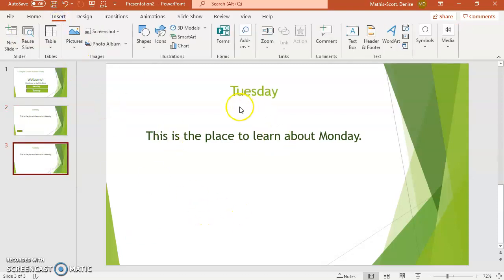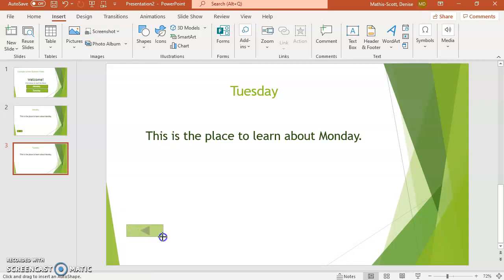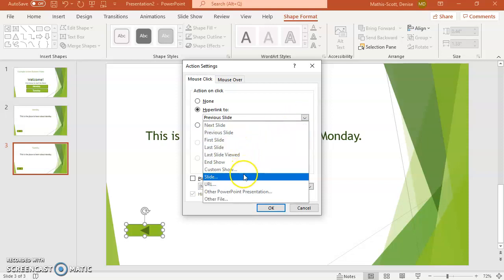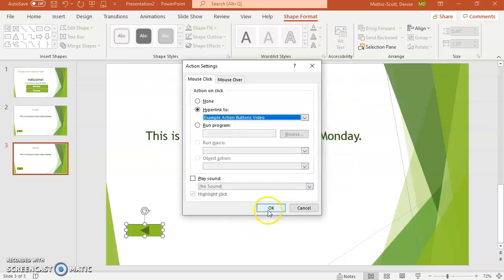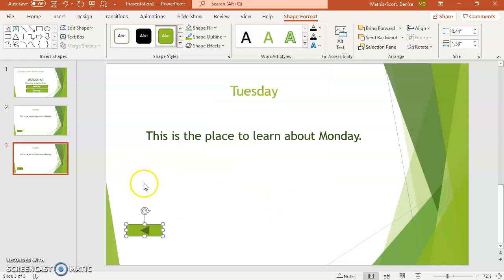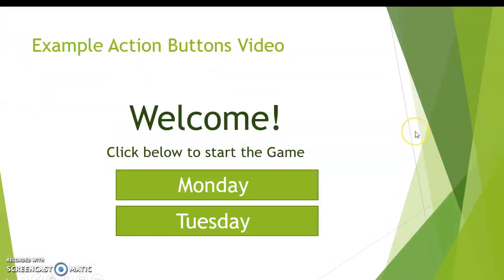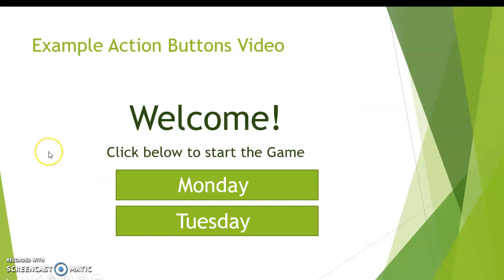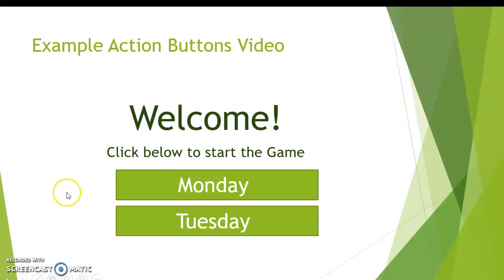Now let's set the back button for the Tuesday slide. Go to Insert, Shapes, scroll down to Action Button, click it, and draw the button. Make sure it goes back to the original slide — click Slide, select Welcome, click OK, then OK again. Now let's run the slideshow from the beginning: clicking Monday takes us to the Monday lesson, clicking Back returns to the welcome page, clicking Tuesday takes us to the Tuesday lesson, and clicking Back returns to the welcome page.